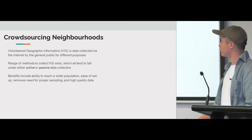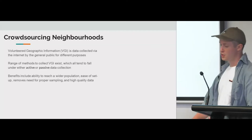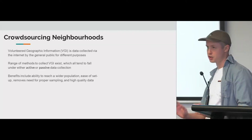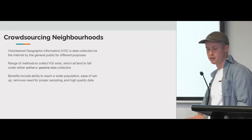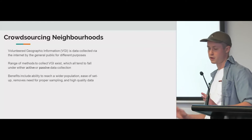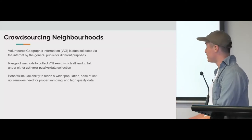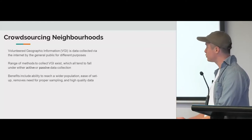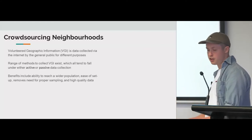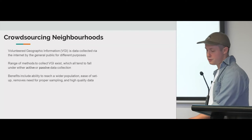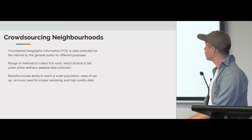Crowdsourcing neighbourhoods — so VGI, Voluntary Geographic Information, is created by the general public for a range of purposes. A range of methods are used to collect VGI, and they're either active — I'll give some examples.